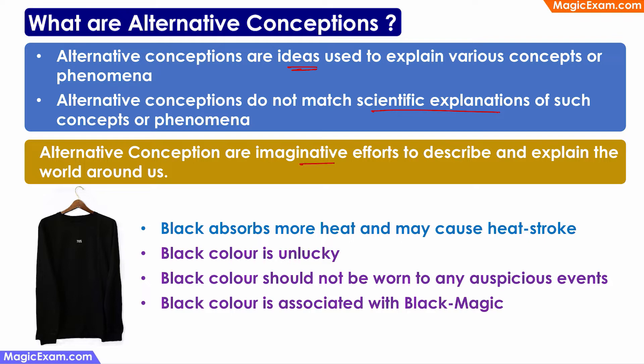Alternative conceptions are imaginative efforts used to describe and explain the world around us, especially when there is no scientific explanation available. For example, solar eclipses have been happening for millions of years, and when ancient human beings started seeing these eclipses, they needed some way to understand and explain why the sun was disappearing. Not knowing it was just the moon coming between the earth and the sun, they came up with ideas like Rahu eating the sun, or a dragon or a frog eating the sun.